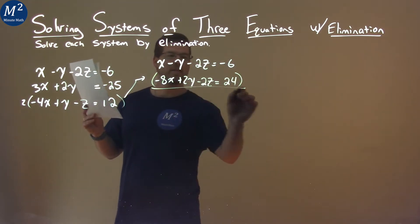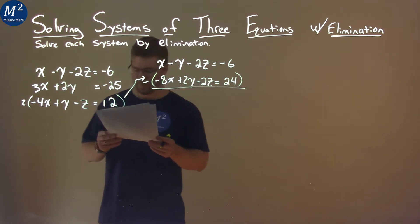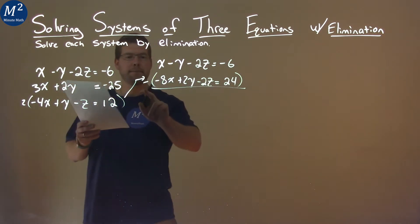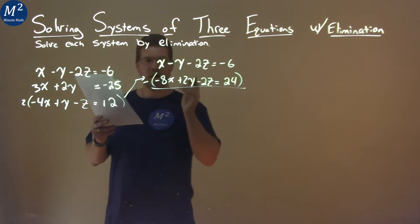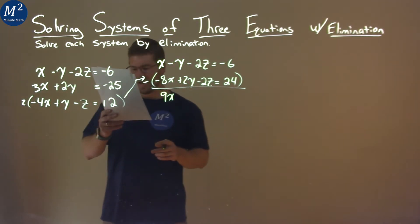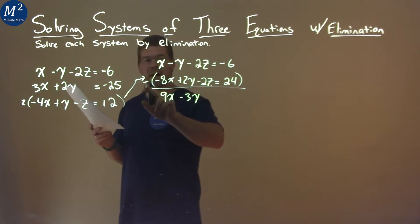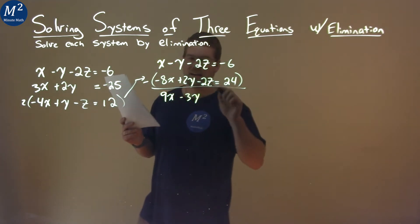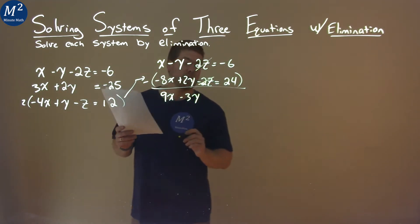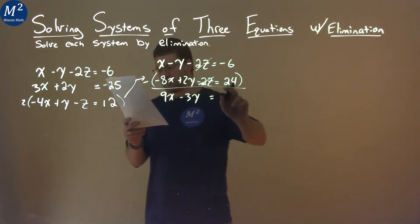If I subtract these two equations from each other, my z's will be eliminated. x minus negative 8x is like adding positive 8x, and we have 9x. Negative y minus 2y is negative 3y. Negative 2z minus negative 2z cancels. And negative 6 minus 24 is negative 30.